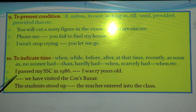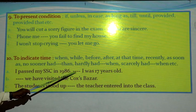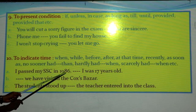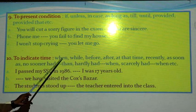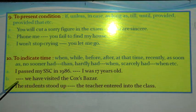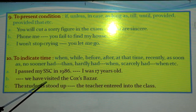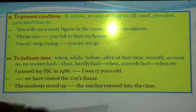In the first line we see: 'I passed my SSC in 1986 — I was 17 years old.' We can use 'when,' a time-indicating conjunction or connector, in the gap. Number B: at the outset of the sentence there is a gap: '— we have visited Cox's Bazar.' We can use 'recently': 'Recently, we have visited Cox's Bazar.' It is present perfect tense, and before it in the gap we can use 'recently'.